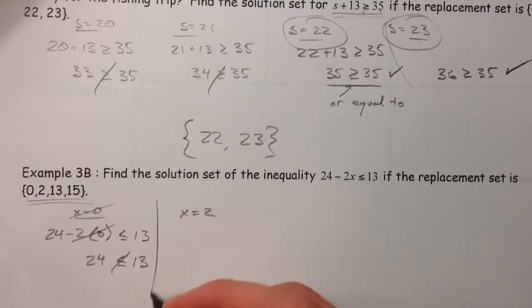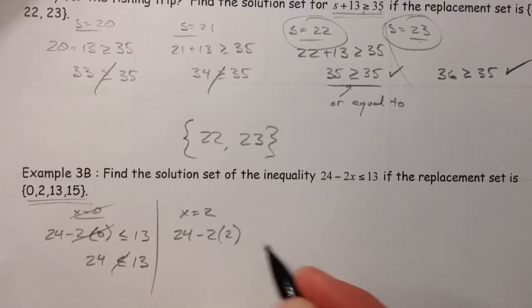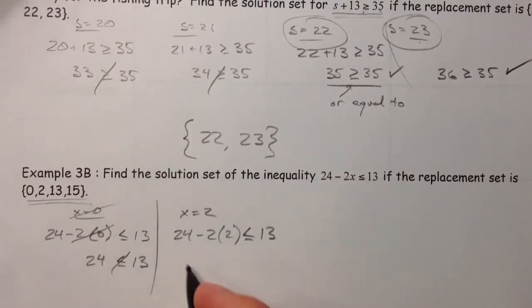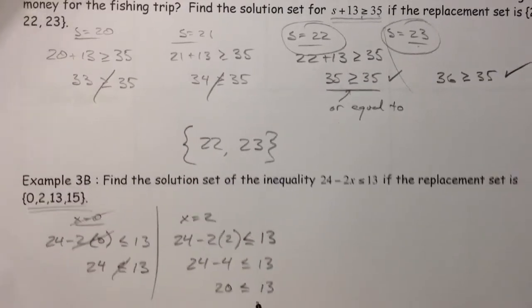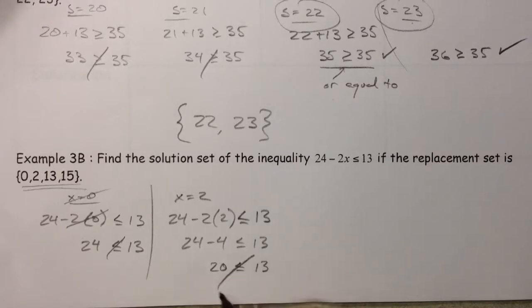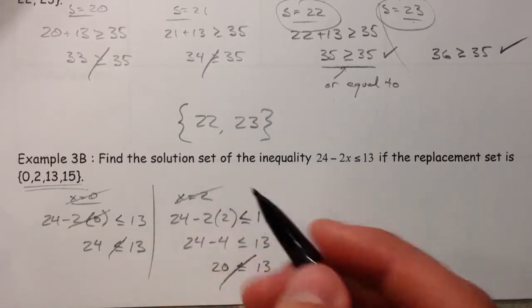What about x equals 2? 24 minus 2 times 2 is less than or equal to 13. 24 minus 4. So, that's 20 is less than or equal to 13. And by that, we mean 20 is not, because 20 is bigger than 13. So, that one doesn't work.